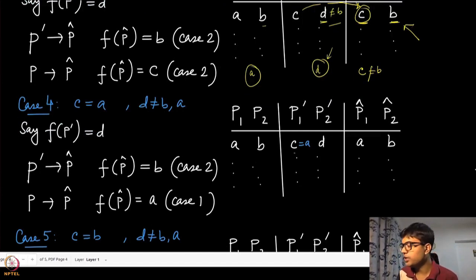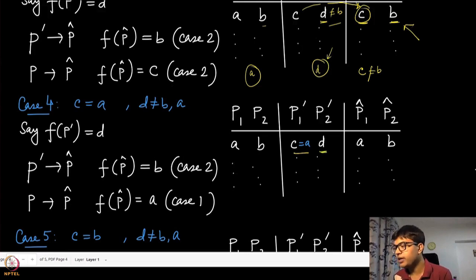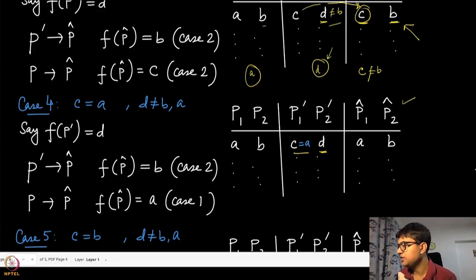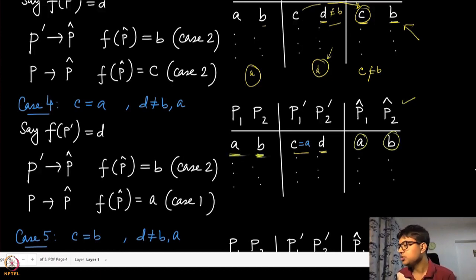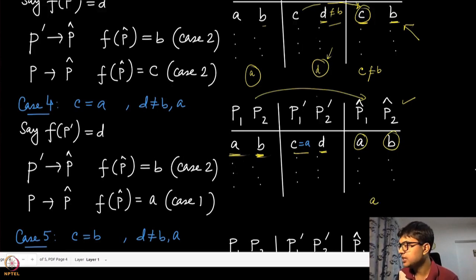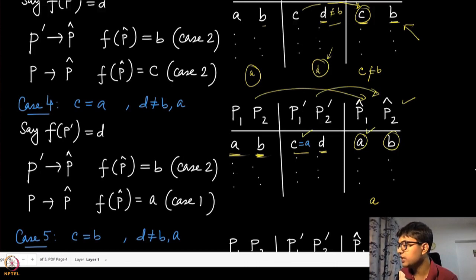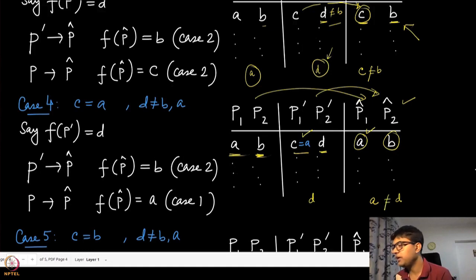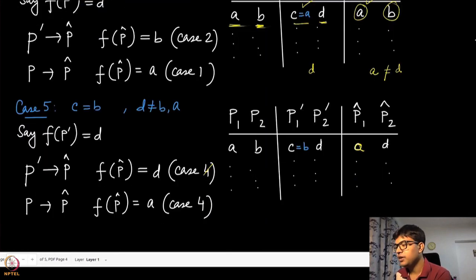Case 4: the top alternative of player one remains a, and the top alternative of player two moves to some d that is neither a nor b. We construct an intermediate profile with top alternatives a and b. Applying Case 1 for one transition gives outcome a, and applying Case 2 for the other transition under the contradiction assumption gives outcome d. Since d ≠ a by assumption, this is a contradiction, proving Case 4.